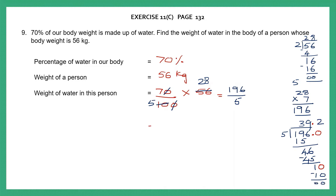The weight of water in this person is 39.2 kg. The weight of the person is 56 kg, and the weight of water in this person is 39.2 kg.